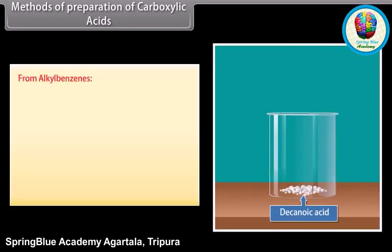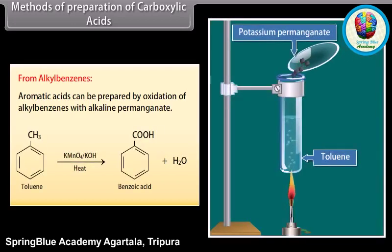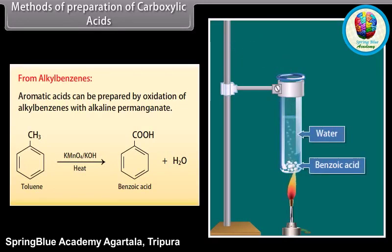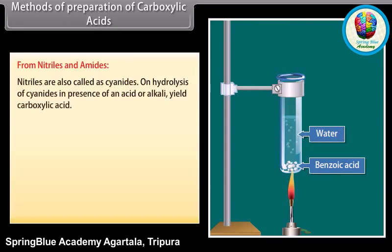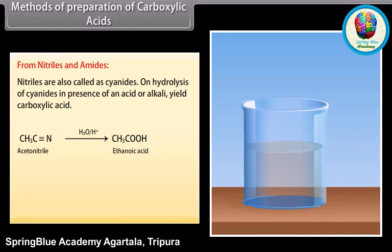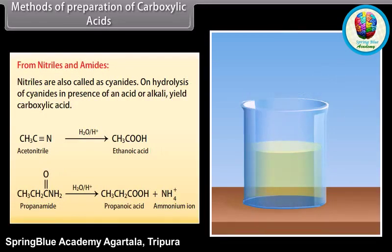From alkylbenzenes: aromatic acids can be prepared by oxidation of alkylbenzenes with alkaline permanganate. Toluene reacts with potassium permanganate in alkaline medium and forms benzoic acid. From nitriles and amides: nitriles are also called cyanides. On hydrolysis of cyanides in the presence of an acid or alkali, they yield carboxylic acids. Hydrolysis of acetonitrile in the presence of an acid forms ethanoic acid. On hydrolysis of propanamide in the presence of an acid, it forms propanoic acid and ammonium ion.